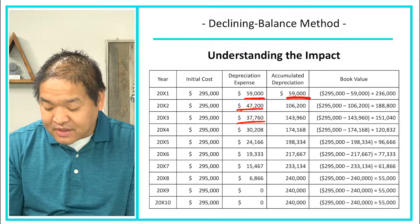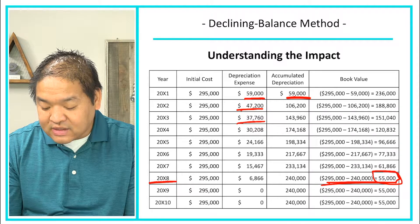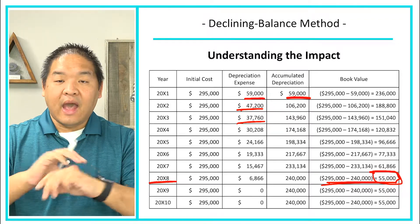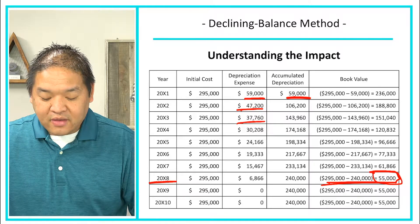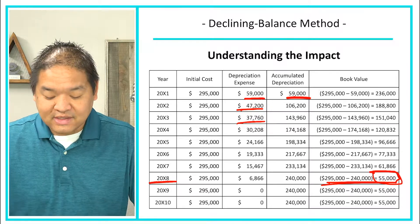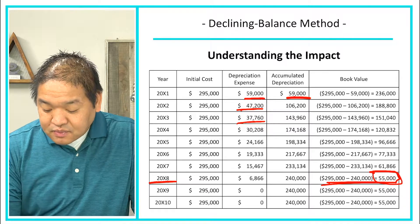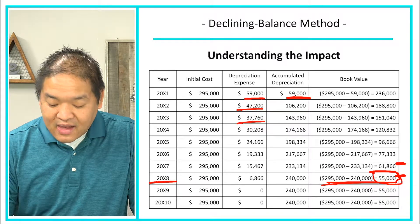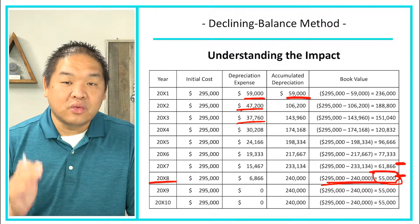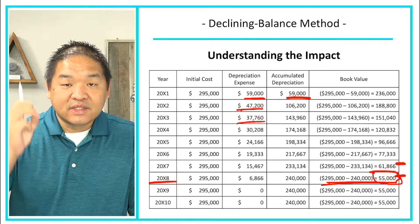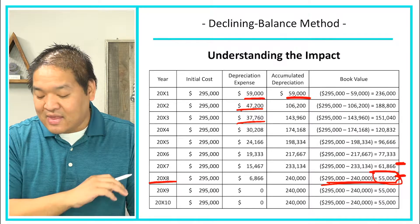In year eight, book value equals residual value, so we stop and take no more depreciation. If you calculate year eight's depreciation using the formula, the result would be more than $6,866, but since we can't go below residual value, we simply subtract the residual value from the current book value and get $6,866. In that final year of depreciation it's usually not the same formula result — you book what's left, $6,866, and then you're done.